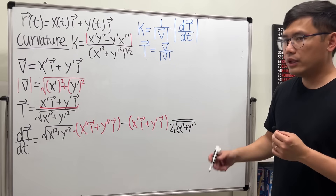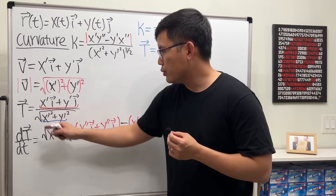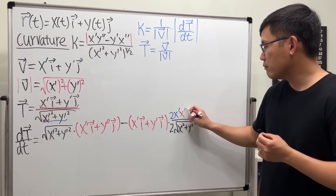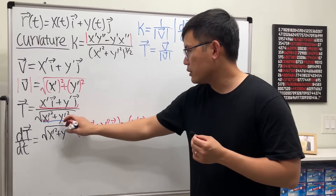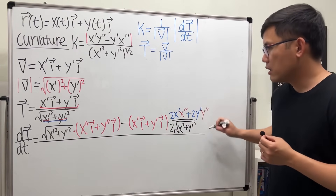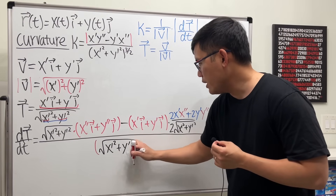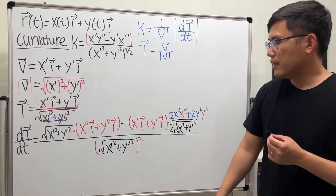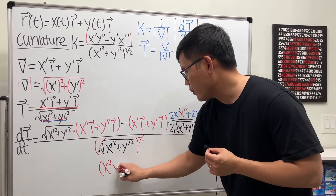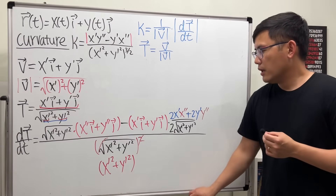For the derivative of the square root, use the chain rule carefully — x and x-prime are both functions of t. Bring the one-half power to the front: we get two x-prime times x-double-prime, plus two y-prime times y-double-prime. That's the numerator of the chain rule term. The whole expression is divided by the denominator squared, which is x-prime squared plus y-prime squared — the square root squared just gives us x-prime squared plus y-prime squared.